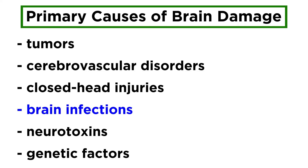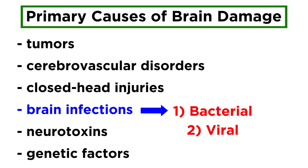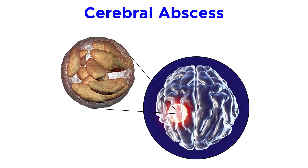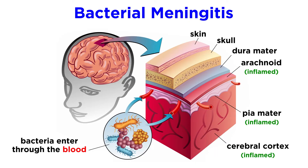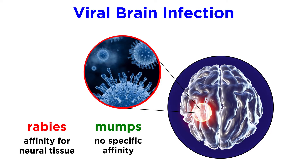Pathogens can infect the brain just like any other part of the body, and the resulting inflammation is called encephalitis. These infections can be bacterial or viral. If bacterial, they can lead to cerebral abscesses, which are pockets of pus, or meningitis, which is a potentially fatal inflammation of the meninges. If viral, the pathogen may have an affinity for neural tissue, such as with rabies, or no particular affinity, such as with the mumps, but attack neural tissue all the same. We will get a closer look at these in the upcoming course on pathology and infectious diseases.